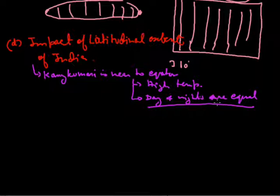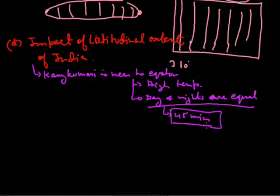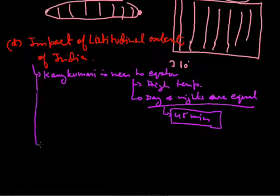If we see the difference in day and night lengths in Kanyakumari, the difference between the longest day and the longest night is only 45 minutes, because it lies so close to the equator.